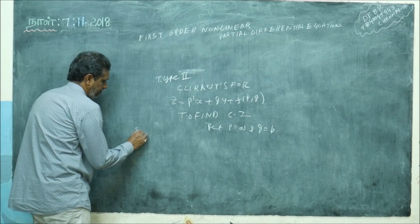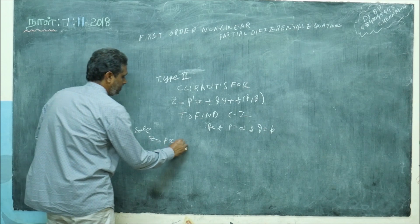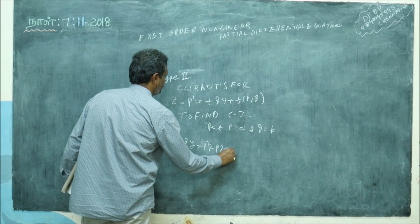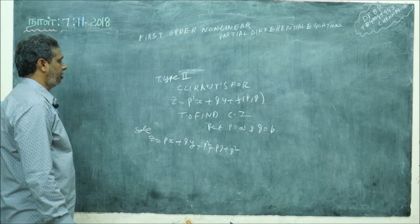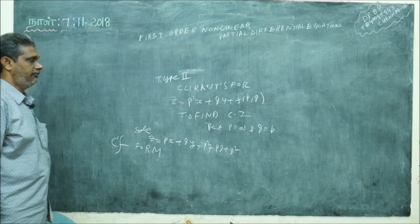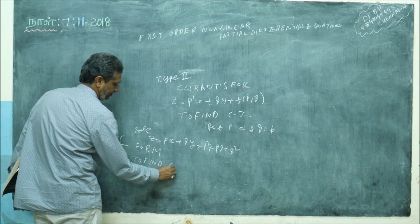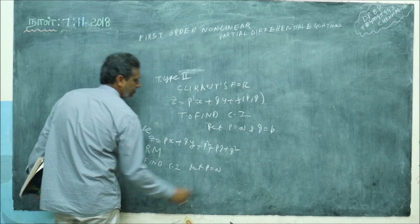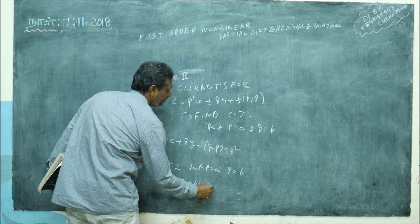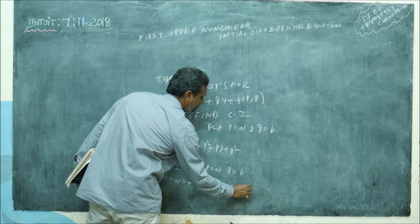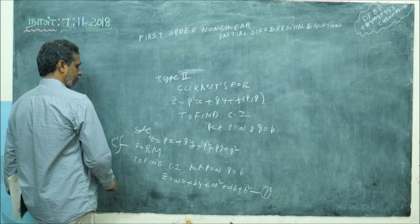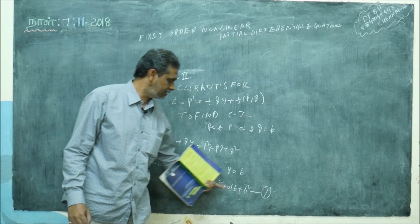First problem: solve z is equal to p·x plus q·y plus p² plus p·q plus q². Seeing this, do not just write 'Type 2' — recognize this is the Clairaut's form. To find complete integral, put p equal to a, q equal to b. So z is equal to a·x plus b·y plus a² plus a·b plus b².